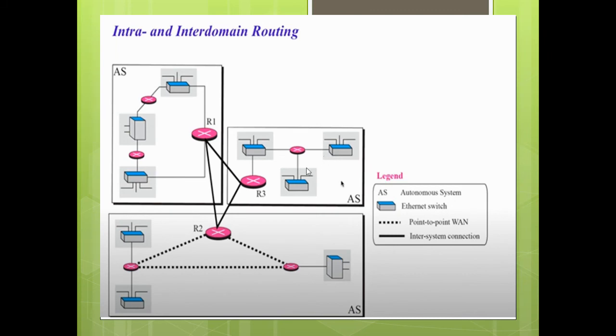In here, you can see the examples we have. There are three autonomous systems. This autonomous system has point-to-point wire link to communicate between the routers. Here it could be a simple LAN and here could be something else.